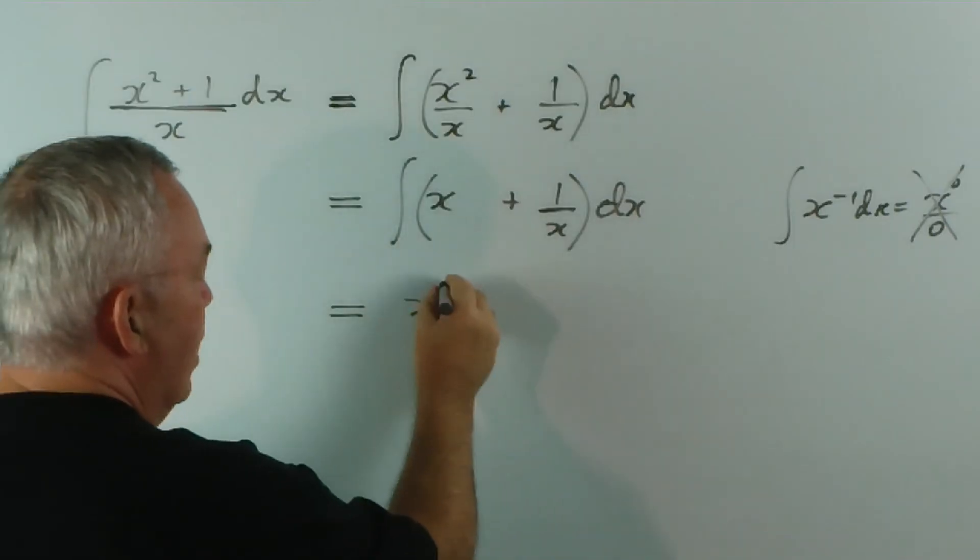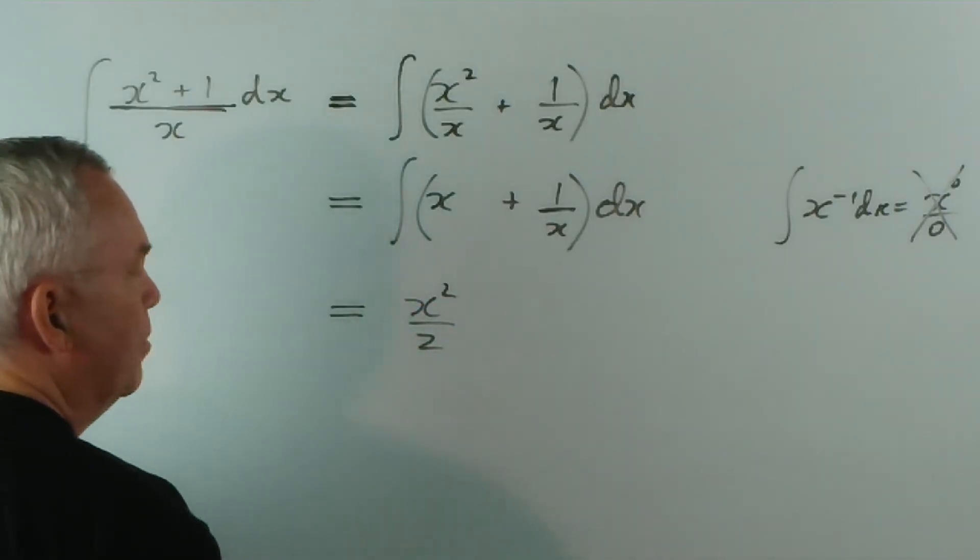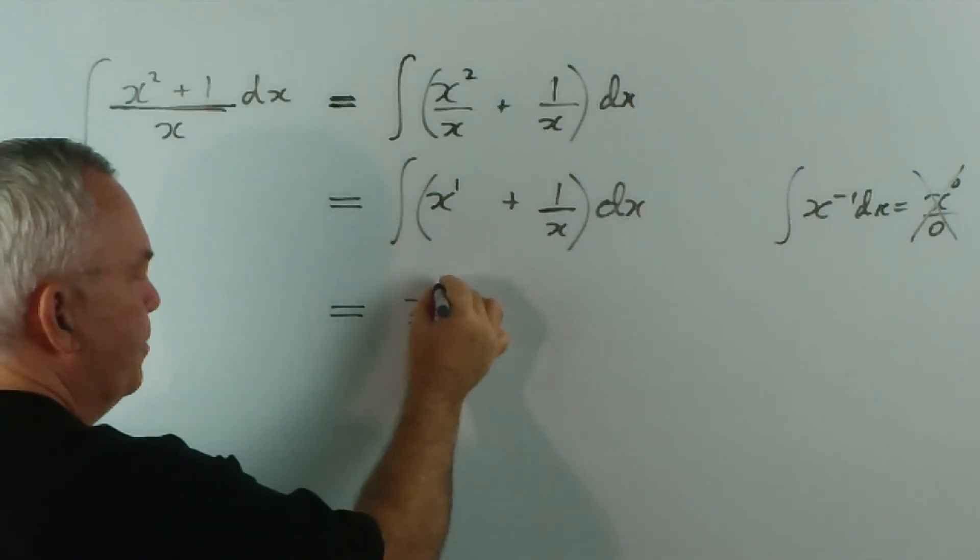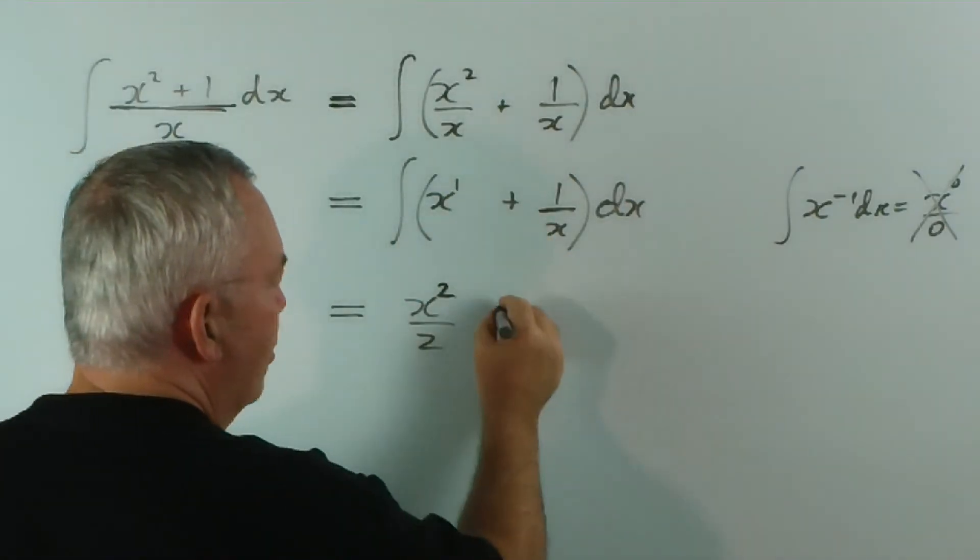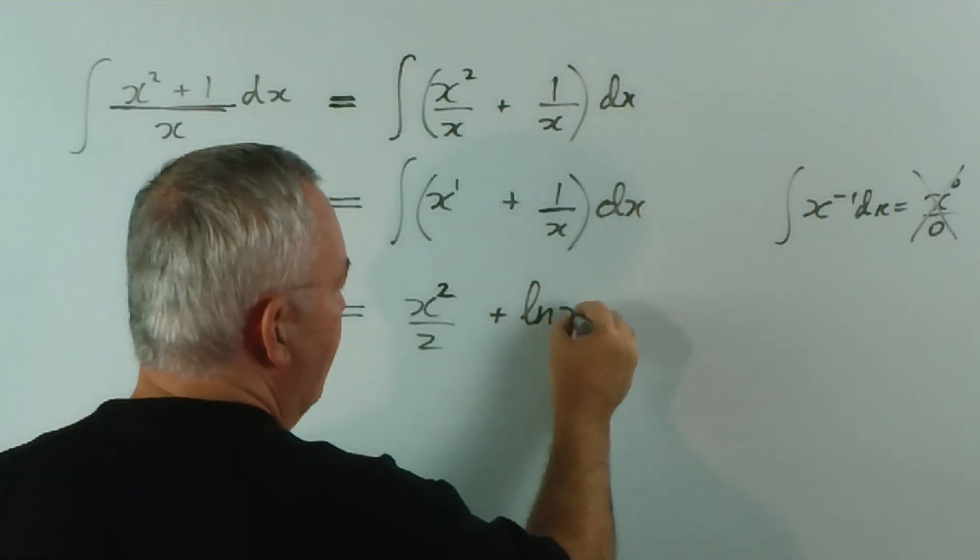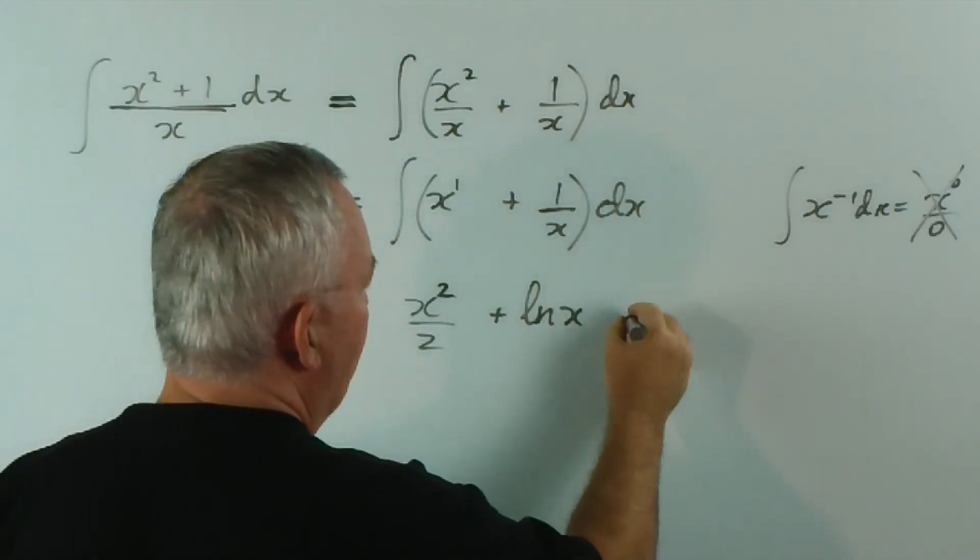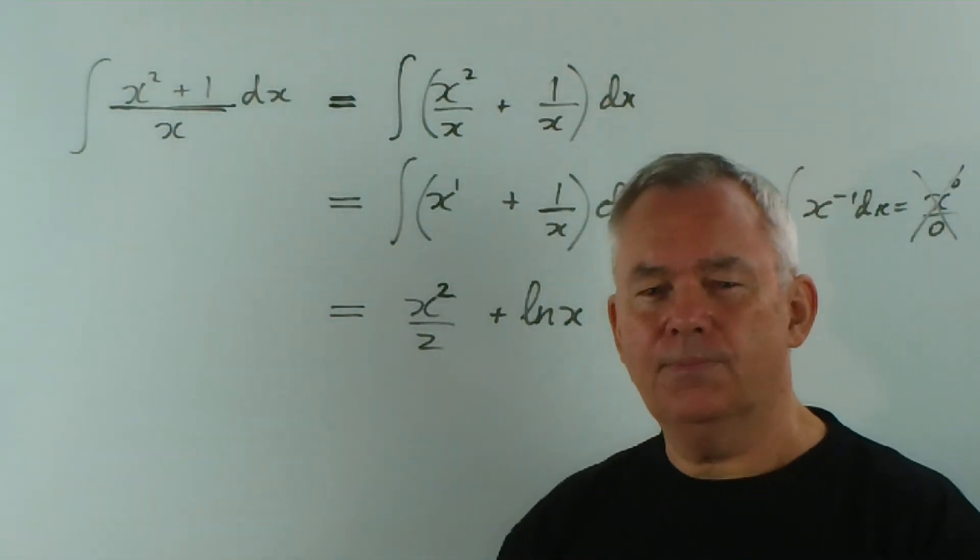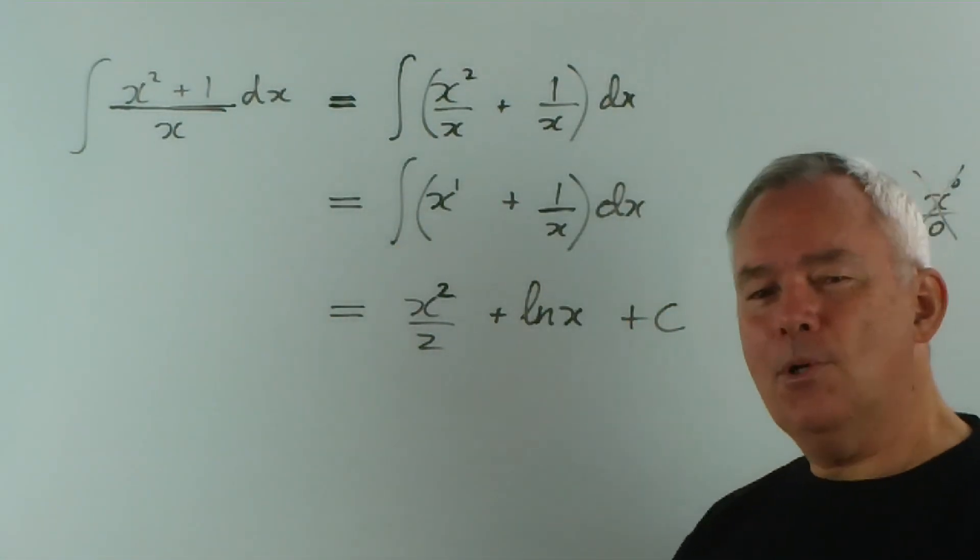So the derivative of x is x squared on 2, because that's x to the power of 1, so we just increase it by 1. And the integral of this is log. And being an indefinite integral, we add the constant. And there's the solution to that particular integral. Thank you for watching.